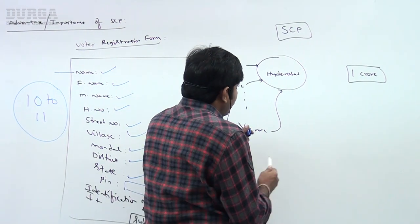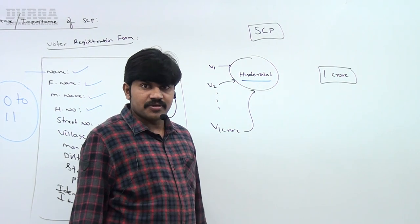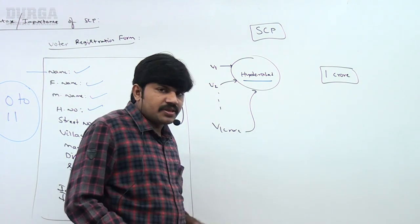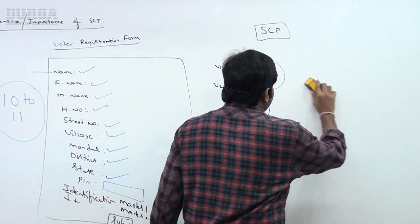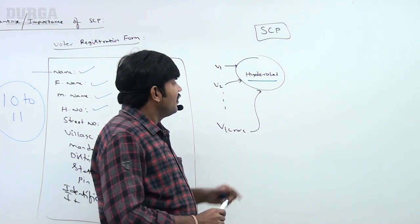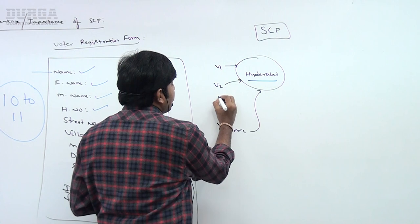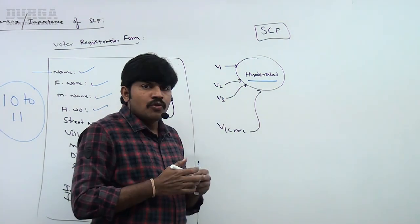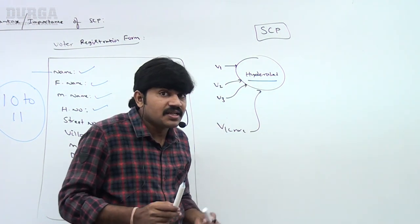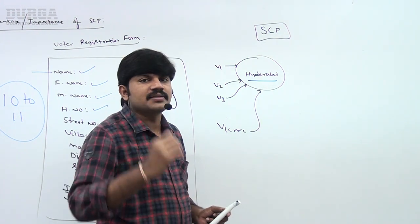But what is the problem with SCP? Assume: how many Hyderabad objects are there? Only one object. But this object can be reused with how many references? 1 crore references. Now suppose Voter 3 wants to change his city name — Voter 3 wants to change his city name from Hyderabad to Vijayawada, because he got transferred.